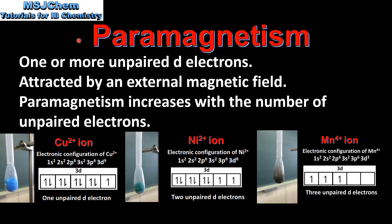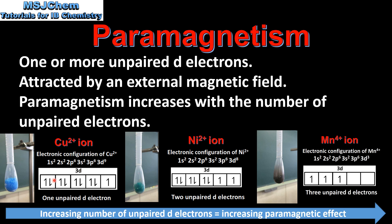Next we look at paramagnetism. The copper 2+ ion, the nickel 2+ ion, and the manganese 4+ ion all showed an effect in a magnetic field. These three ions are paramagnetic — they have one or more unpaired d electrons. Materials that are paramagnetic have unpaired electrons and they are attracted by an external magnetic field. Paramagnetism increases with the number of unpaired electrons. The Mn⁴⁺ ion had the strongest effect with its three unpaired d electrons, and the copper ion showed the weakest effect with its one unpaired d electron.